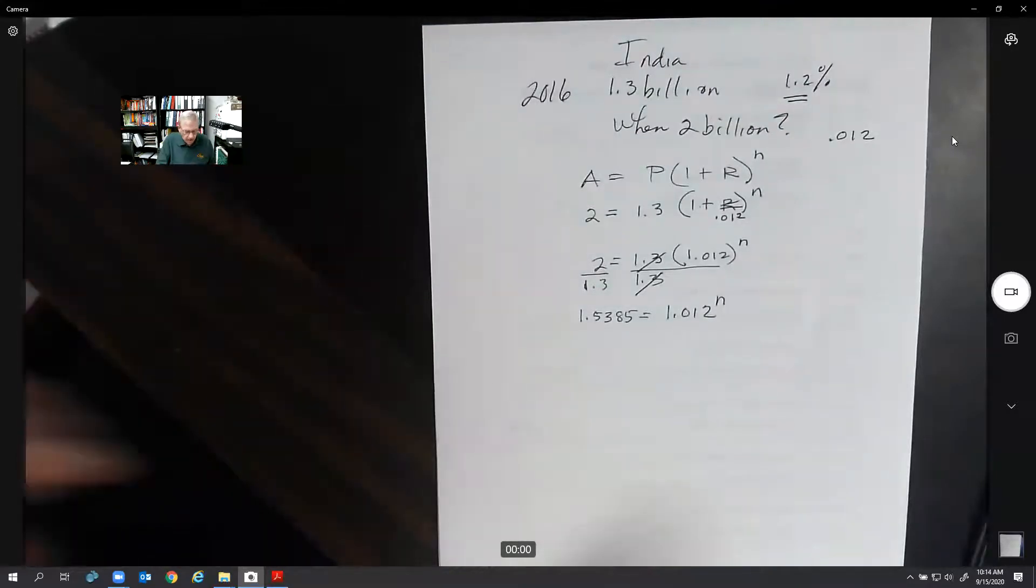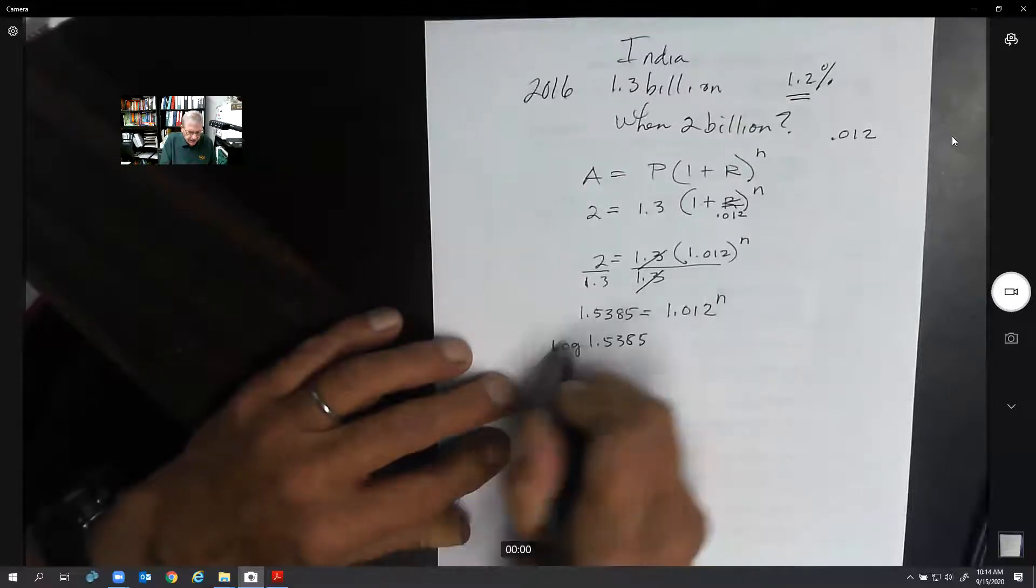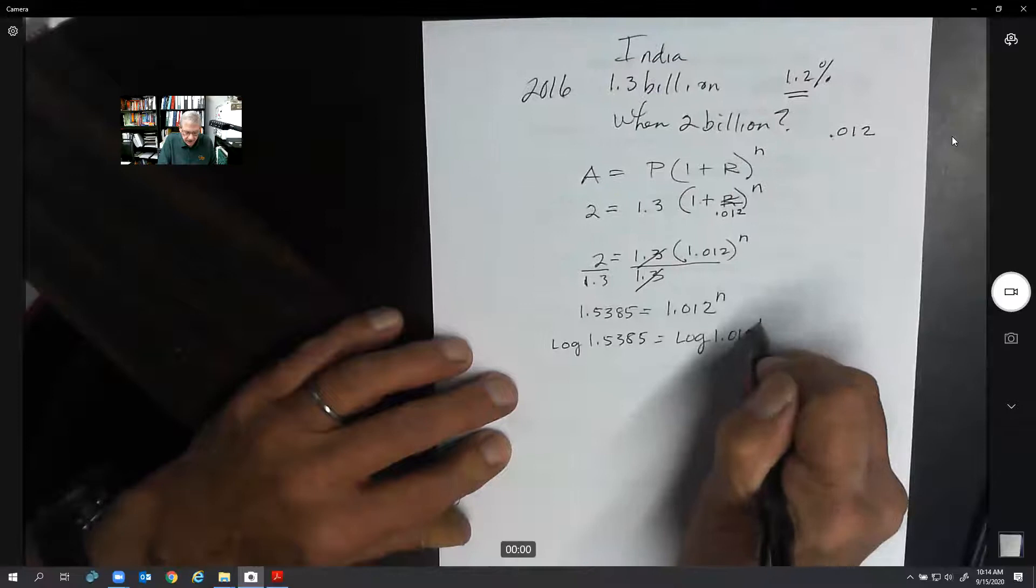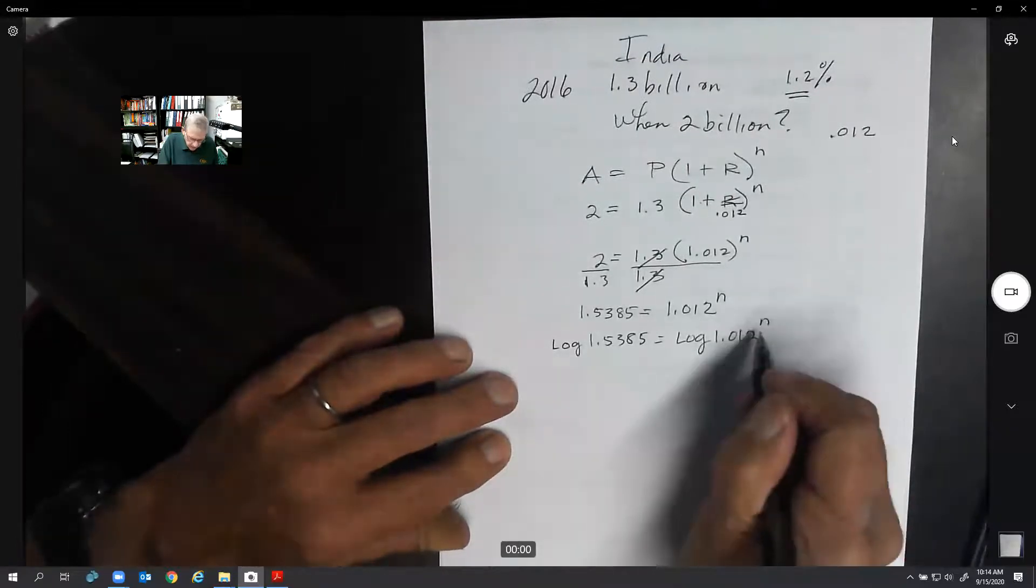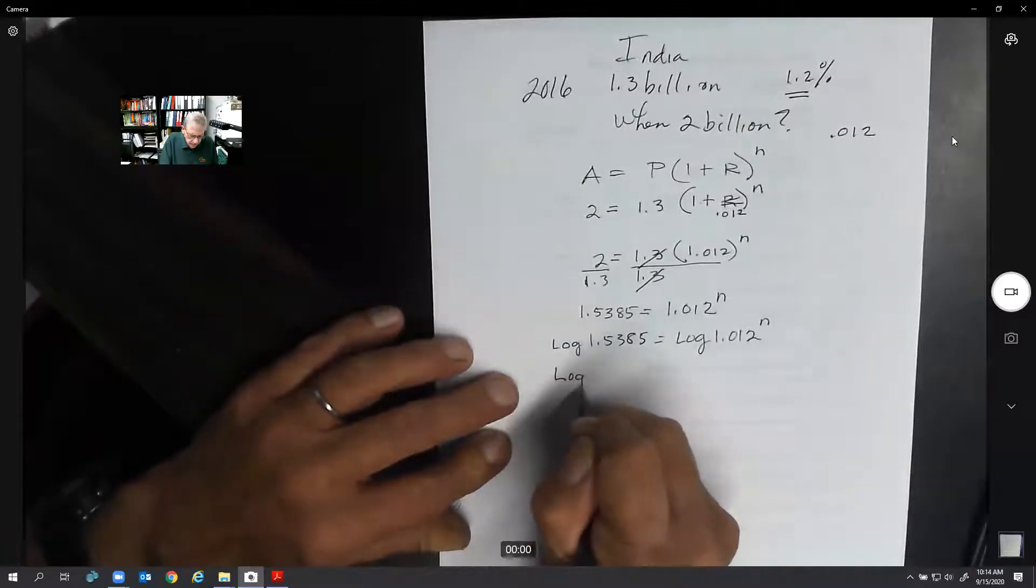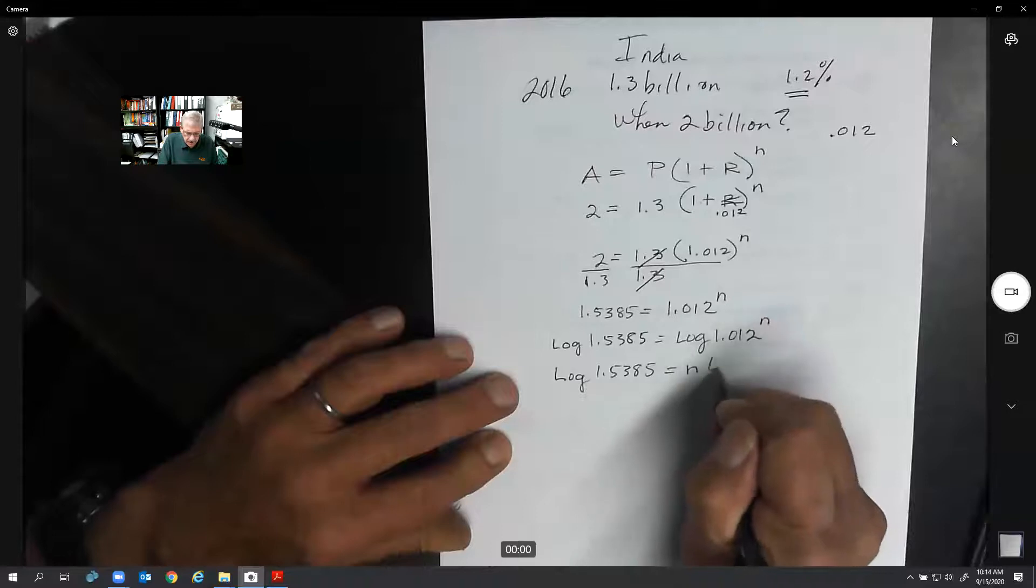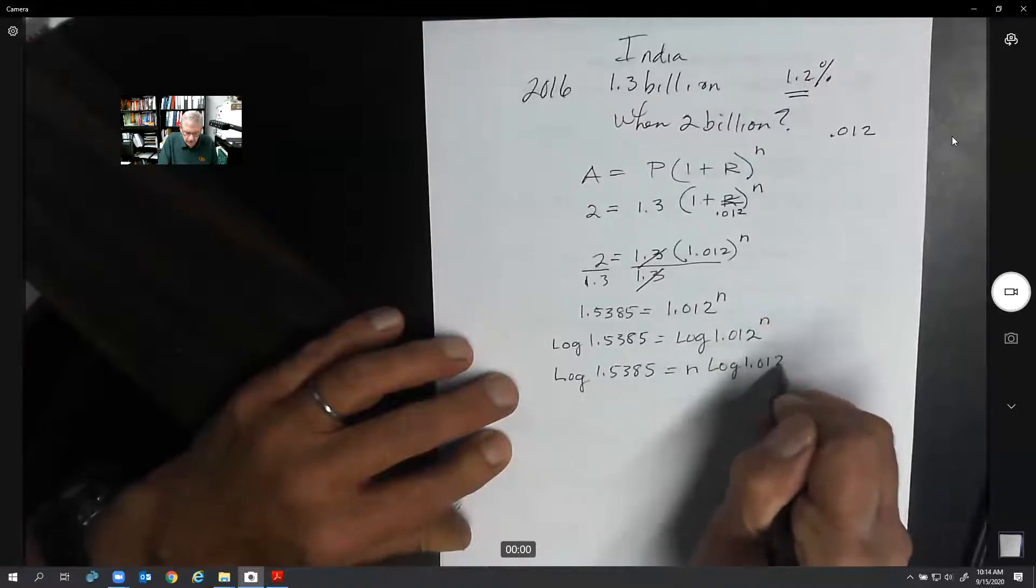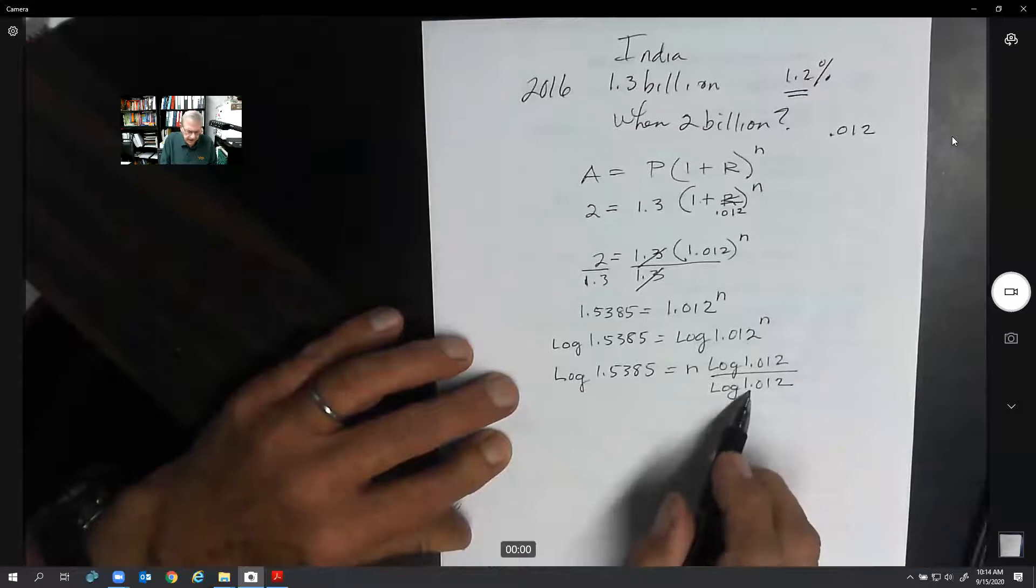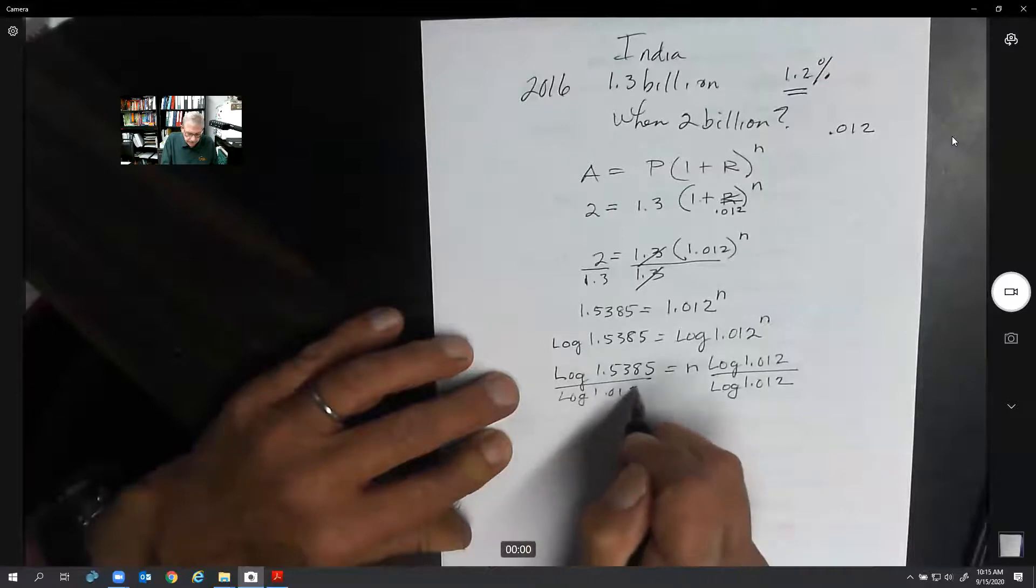Now how am I going to solve that? I'm going to use the old log trick. Log 1.5385 and this is log 1.012^n. And I'm going to simply put my n in front of here. Equals n times log 1.012. So I'm going to divide both sides to get n by itself. I'm going to divide this side by the same number.